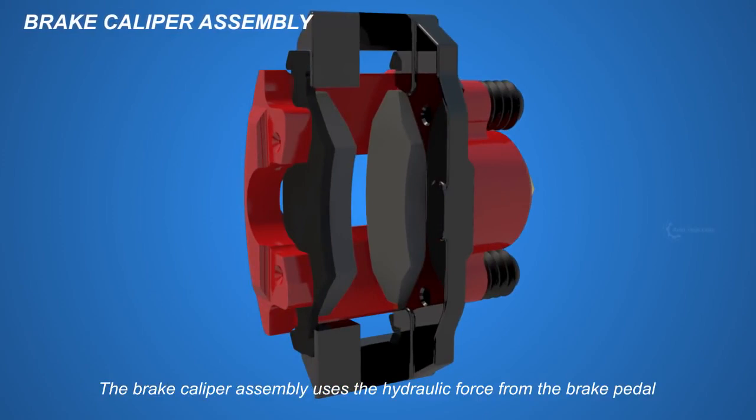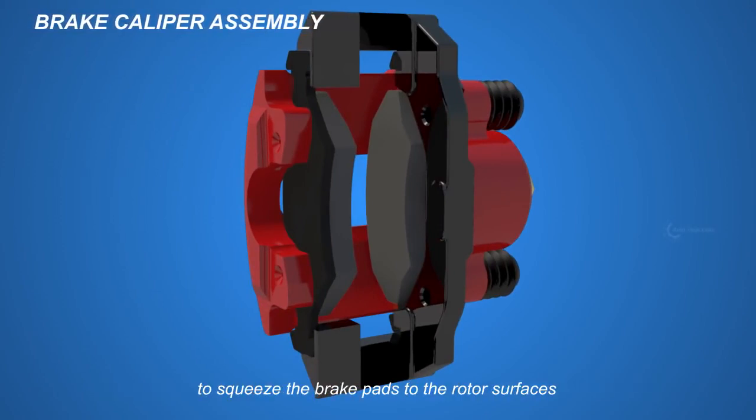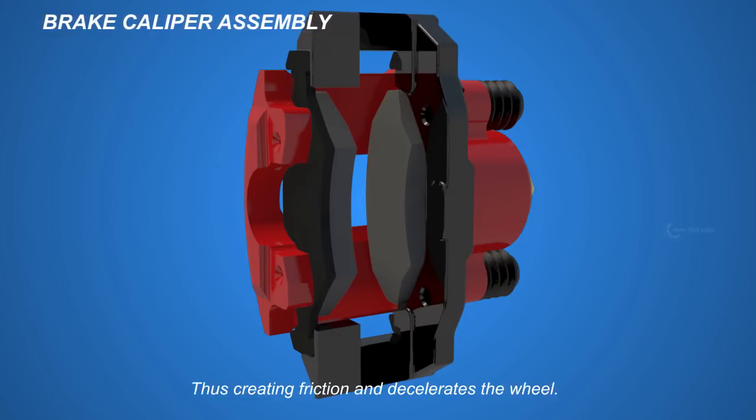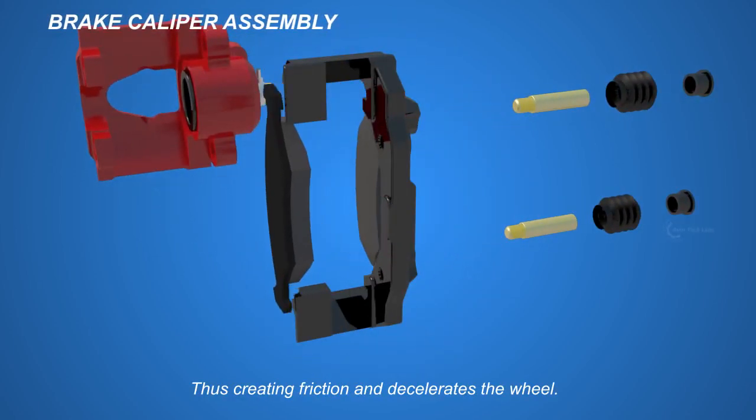The brake caliper assembly uses the hydraulic force from the brake pedal to squeeze the brake pads to the rotor surfaces, thus creating friction and decelerates the wheel.